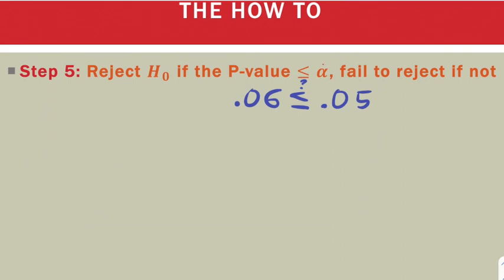Well, no, it's not. 0.06 is greater than 0.05. And since it's not, we're going to fail to reject, which you can abbreviate FTR. We fail to reject the null hypothesis. That's our conclusion.